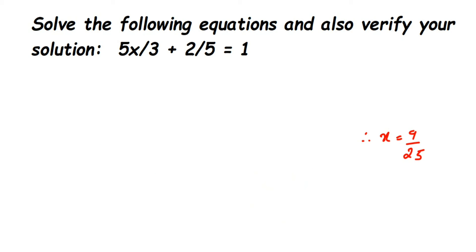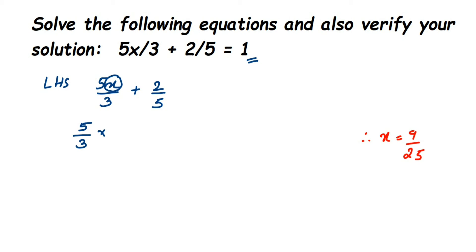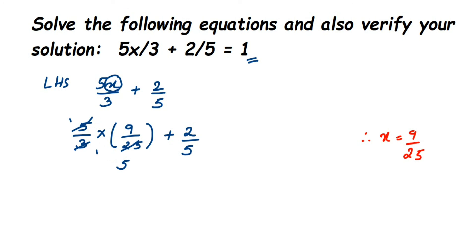For verification, I'm going to take the LHS part of the equation, which is 5x upon 3 plus 2 upon 5, and check if it equals 1 (the RHS). Substituting x equals 9 upon 25: we get 5 upon 3 multiplied by 9 upon 25, plus 2 upon 5. Instead of multiplying directly, we can do cancellation — 5 and 25 cancel (5 ones are 5, 5 fives are 25), and 3 and 9 cancel (3 ones are 3, 3 threes are 9).